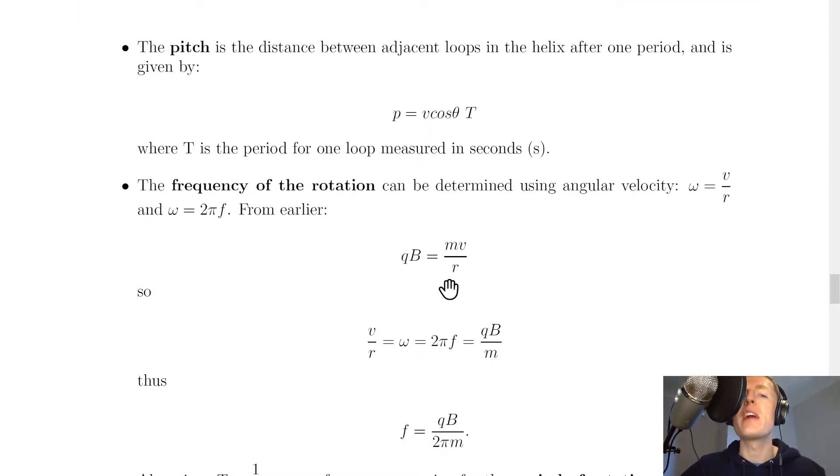Going back to the notes now, we've got an expression for pitch, and this says that the pitch is the distance between adjacent loops in the helix after one period, and is given by p equals v cos theta T. So you'll see that we've used lowercase p to mean pitch, but you could just write out the word pitch if you prefer. You'll also see we've used the velocity parallel to the magnetic field, and capital T is the period for one loop, i.e. the time taken for the charge to move round in one complete revolution.